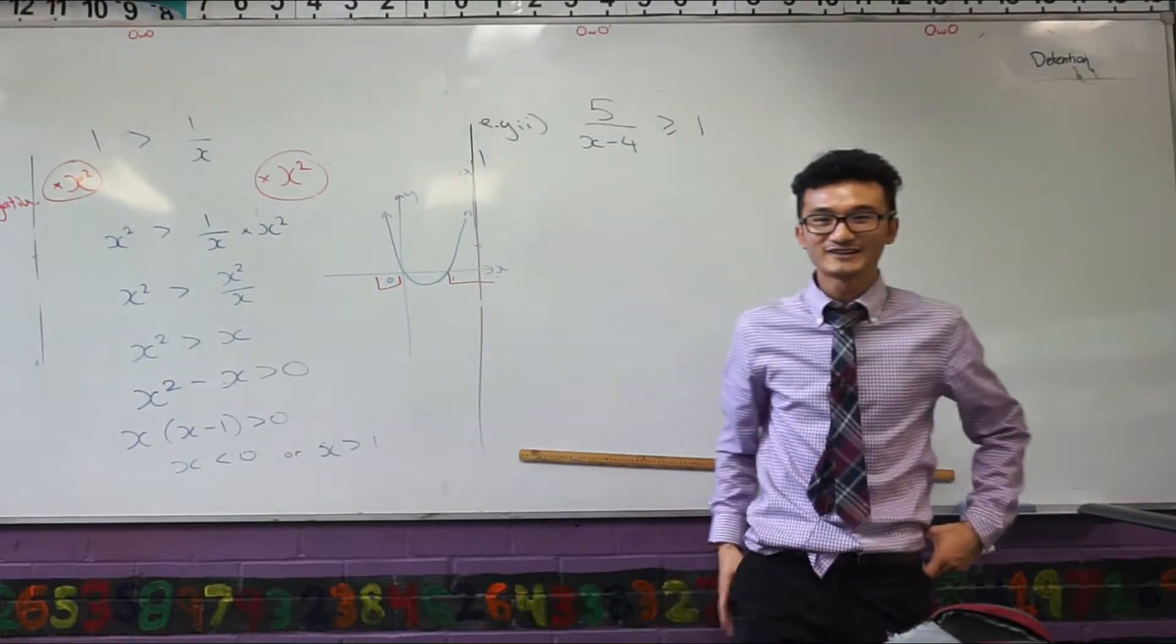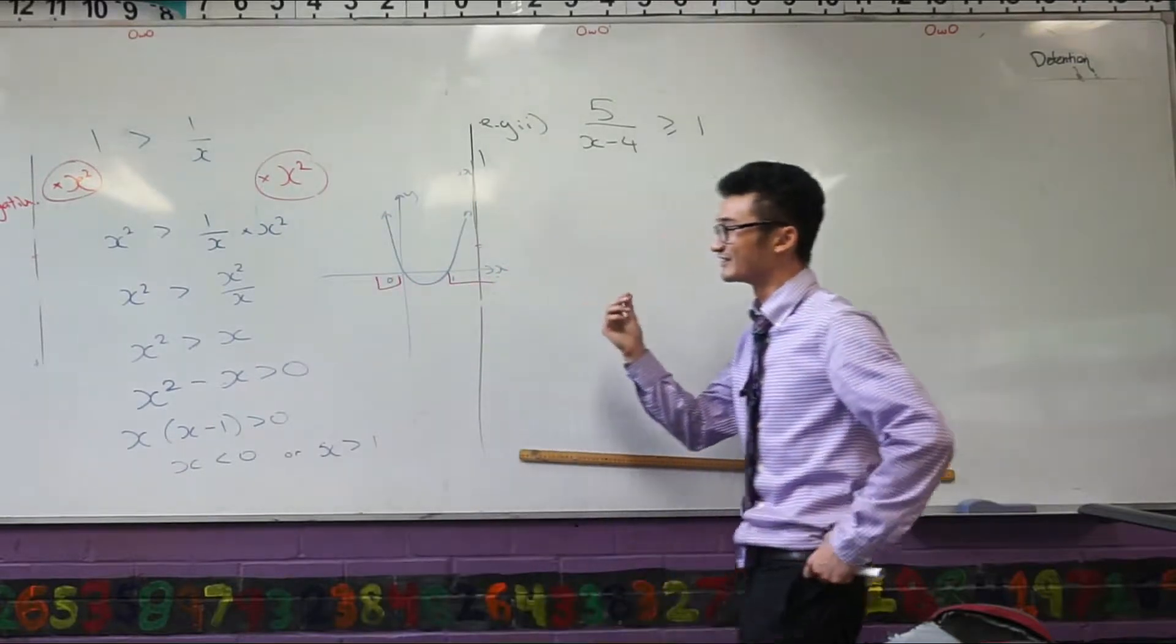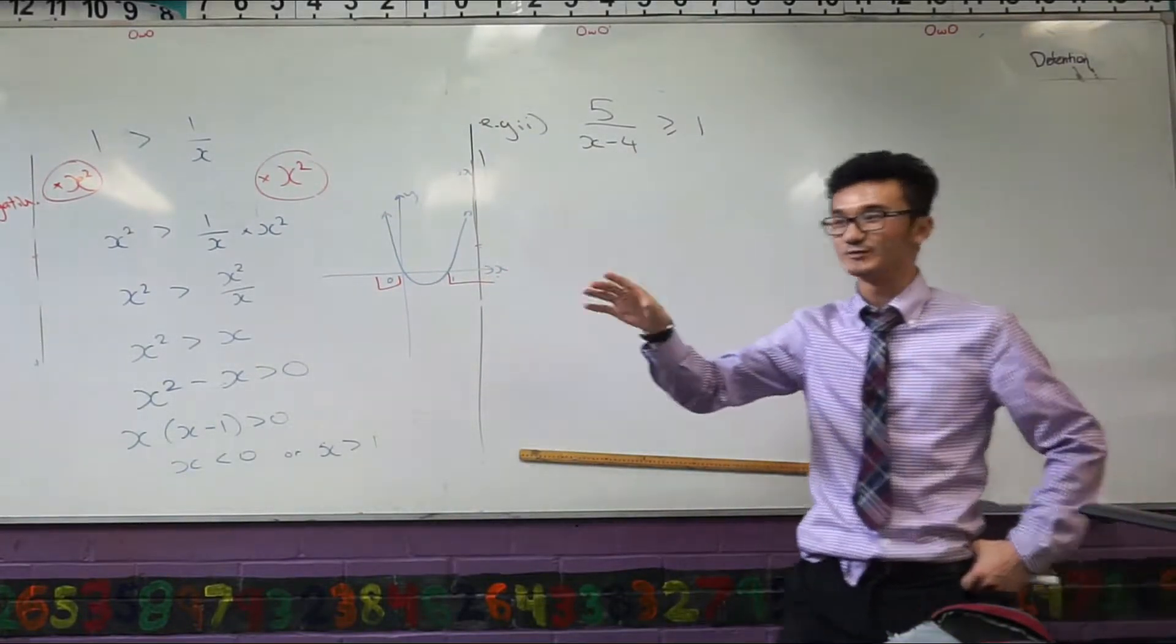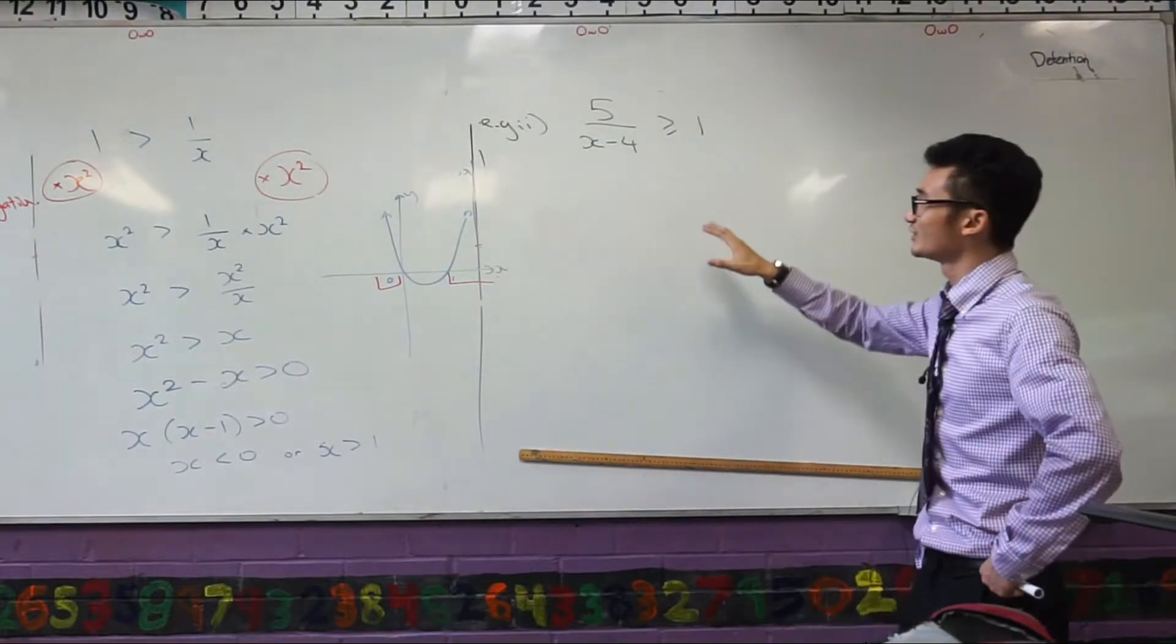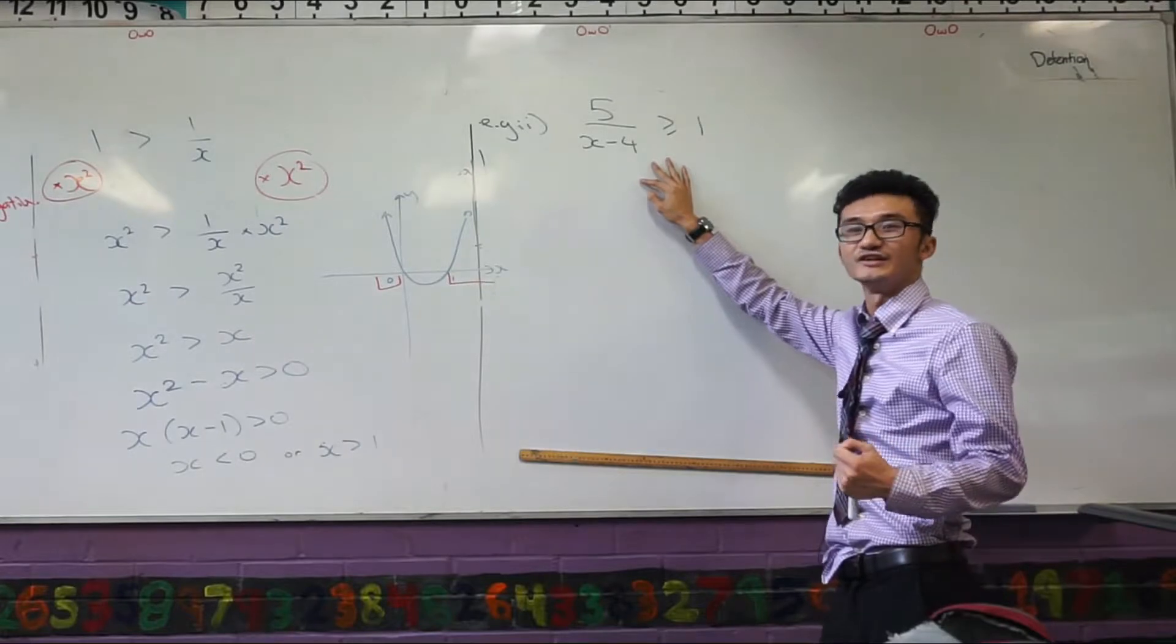Remember what's our problem with quadratic inequalities? We don't know what's on the denominator, so I want to make sure if I am doing any manipulations here, I want to make sure that I'm multiplying by a positive number. How do I guarantee that here?